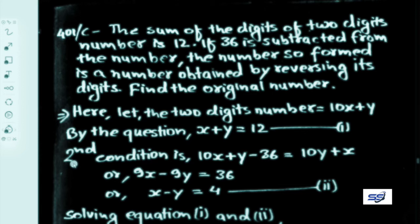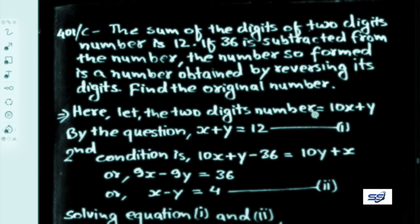From the second condition: if 36 is subtracted from the number, the result equals the reversed number. So 10x plus y minus 36 equals 10y plus x.